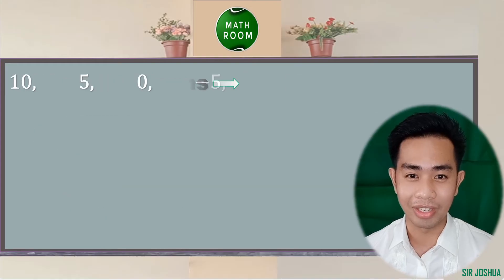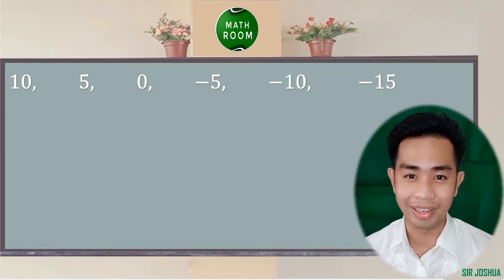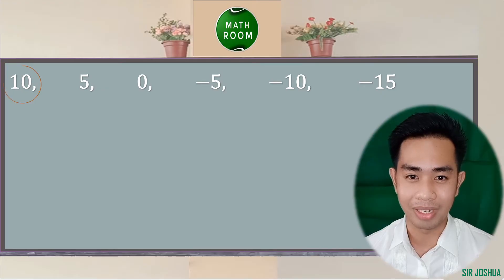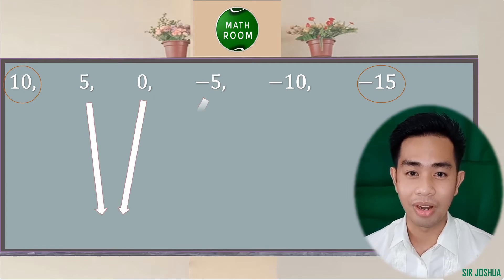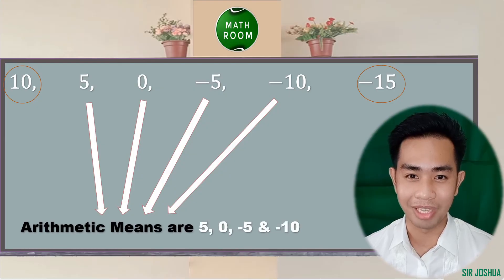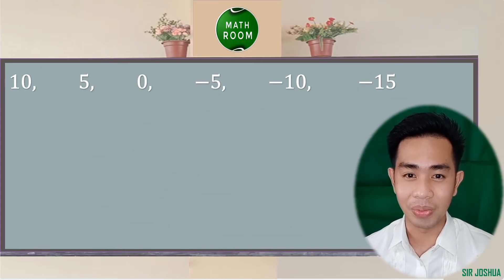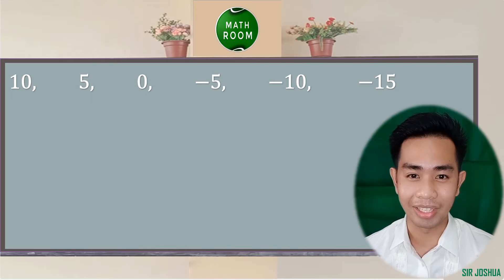Let's take a look at the given arithmetic sequence: 10, 5, 0, negative 5, negative 10, negative 15. We know that 10 is our first term and negative 15 is our last term. The terms in between the first and last term are what we call the arithmetic means: 5, 0, negative 5, and negative 10.